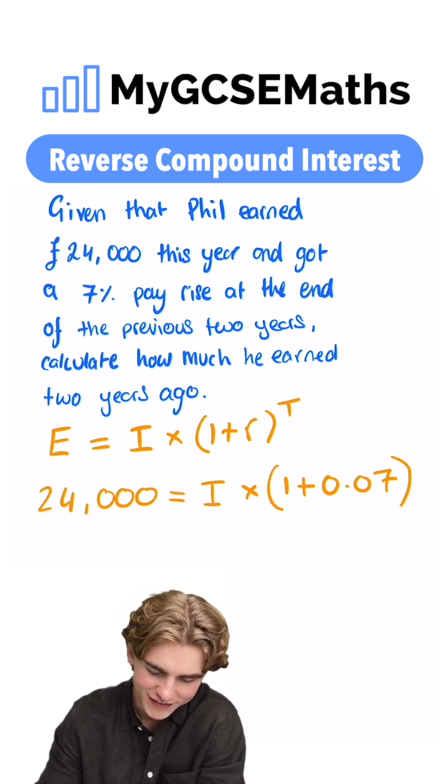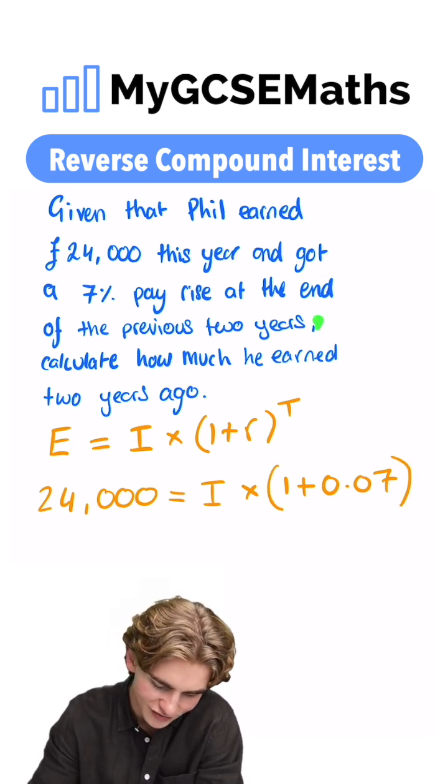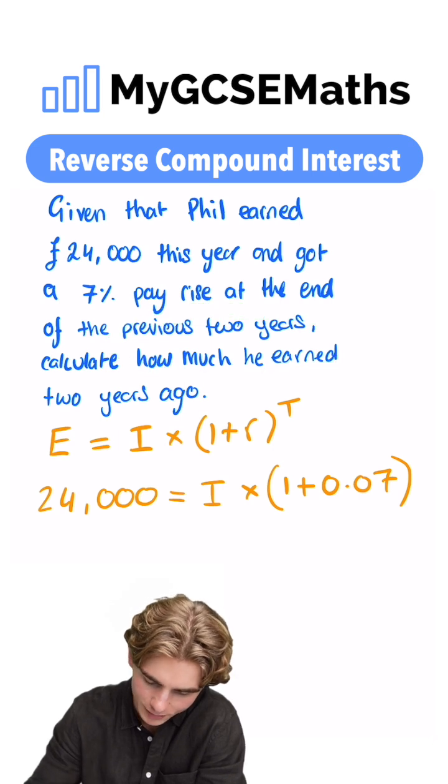And we're raising that to the power of T, our number of time periods. He got a 7% pay rise twice. So our time period is going to be two.